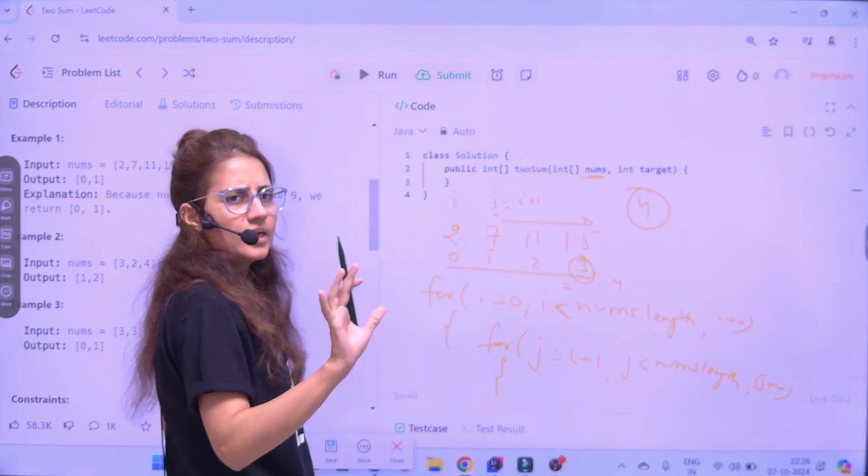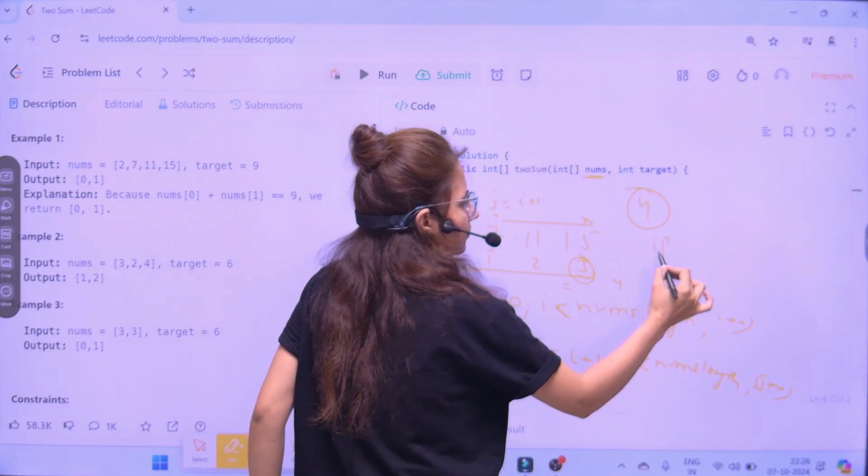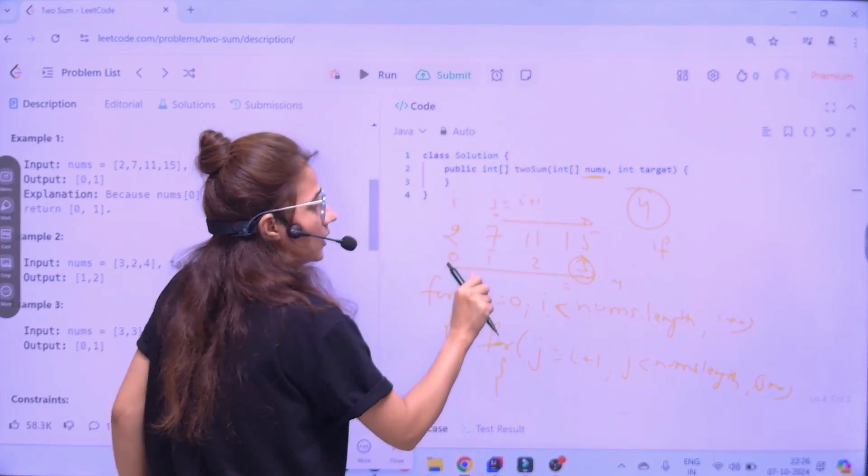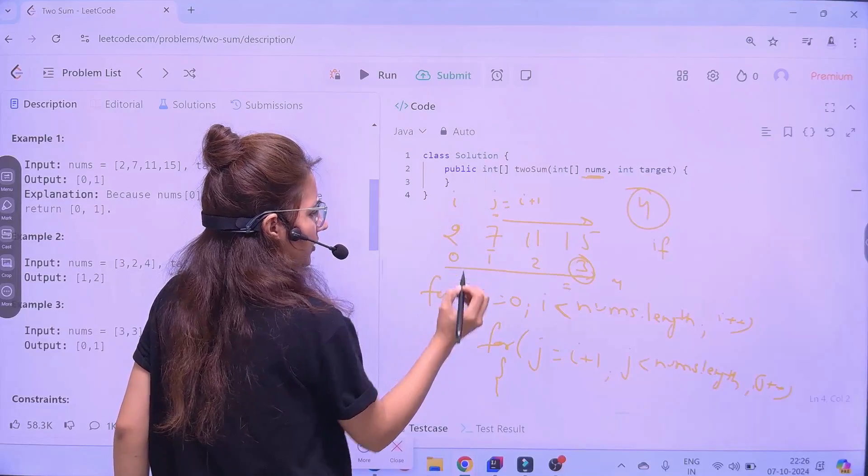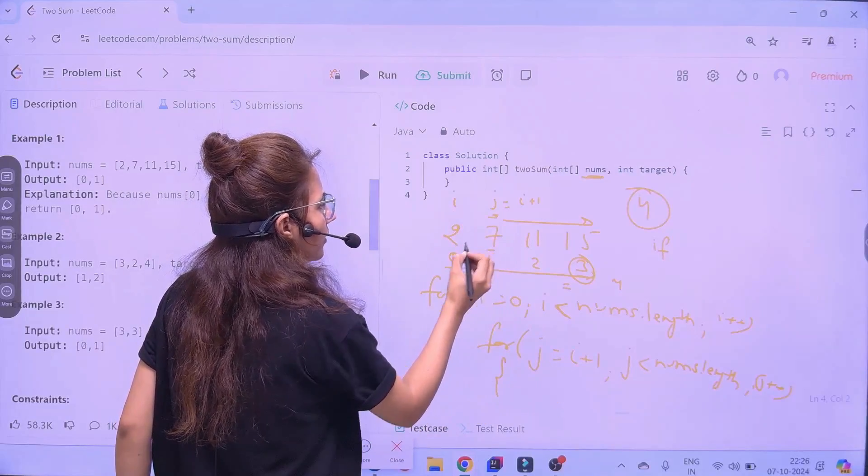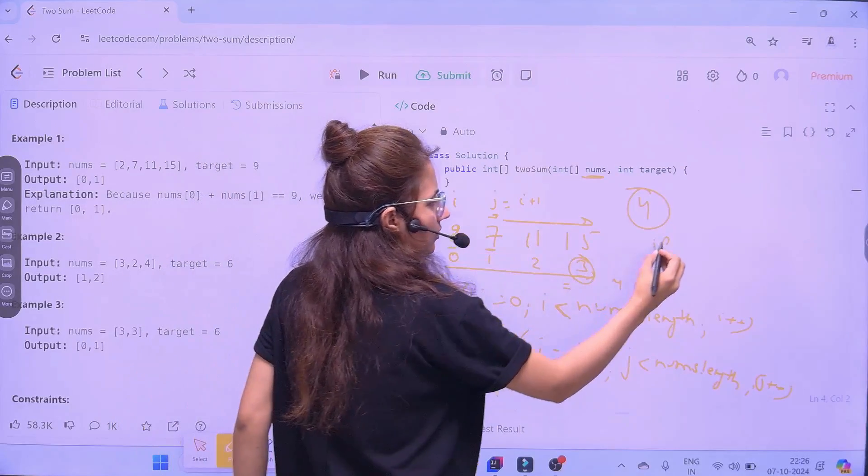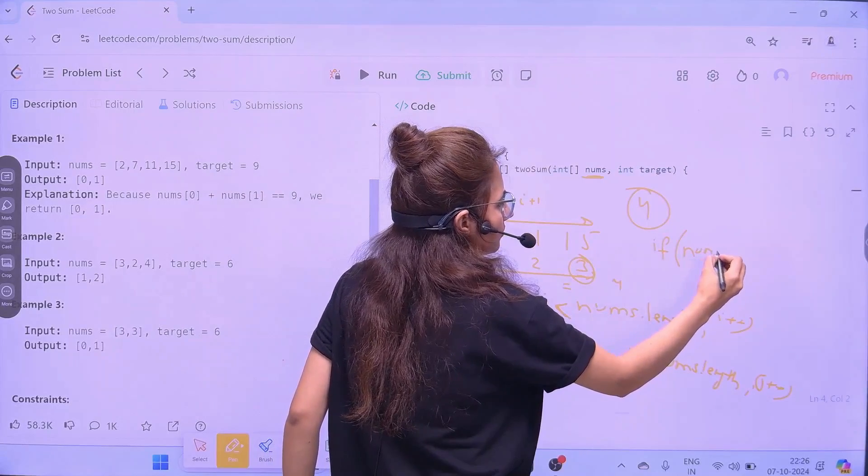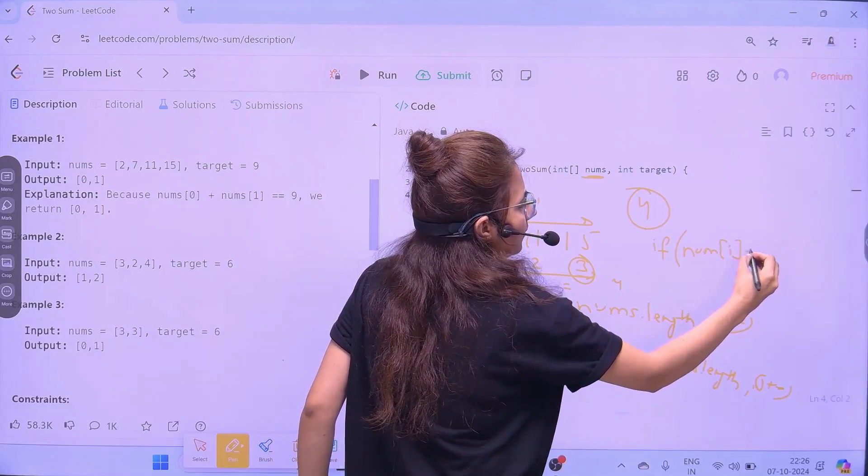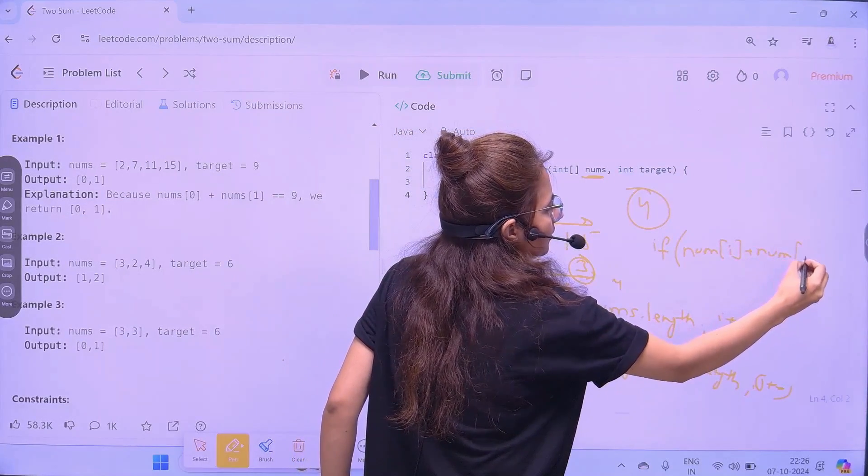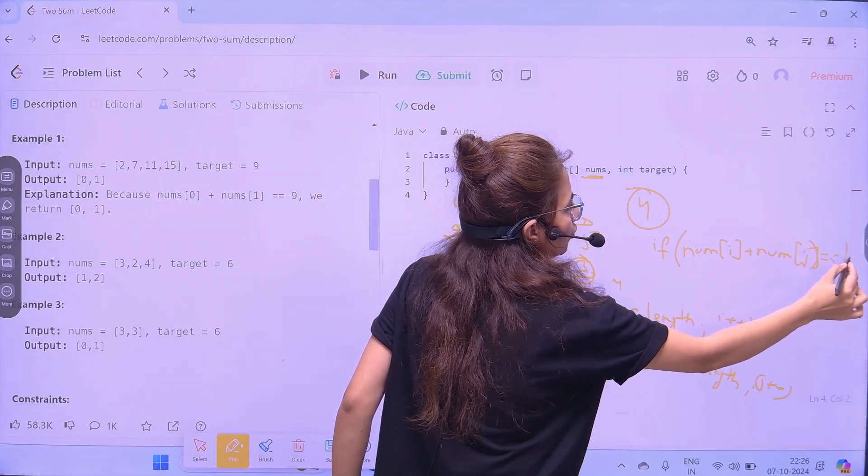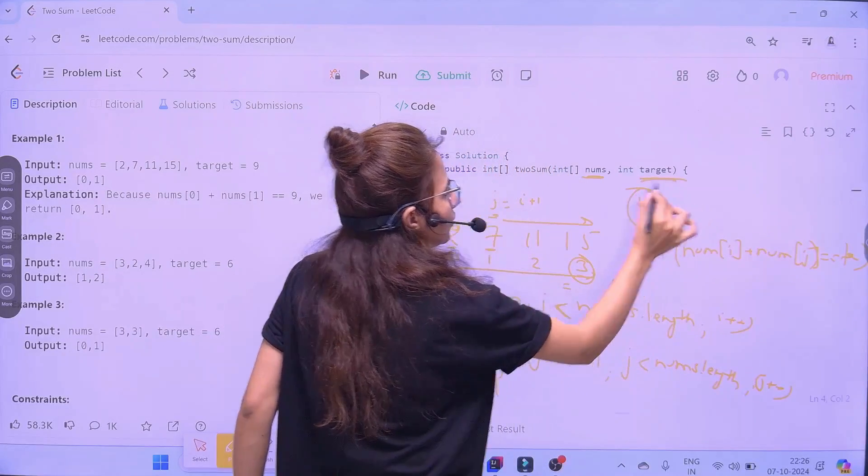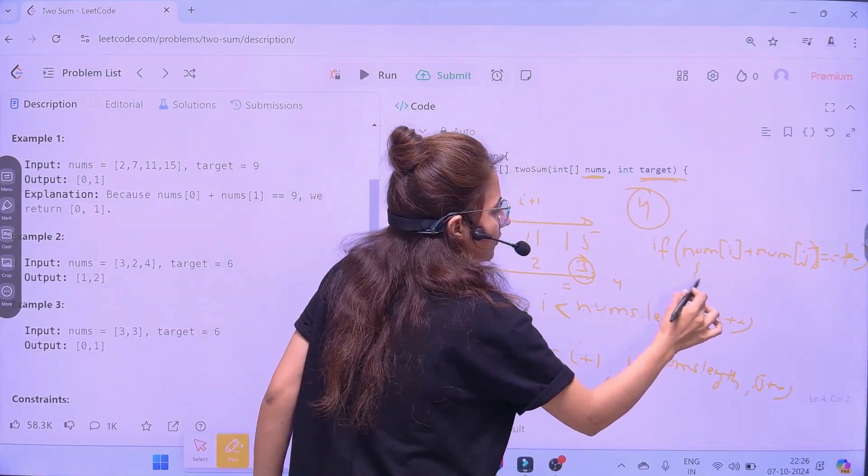Same j plus plus. Within this. We will write simple if. Like, if. I am writing here. If. At i and j. I is 0. J is 1. So, how to access these. Element. Nums of i plus. Nums of j. Equal to equal to. Whatever the target you are given. Target.